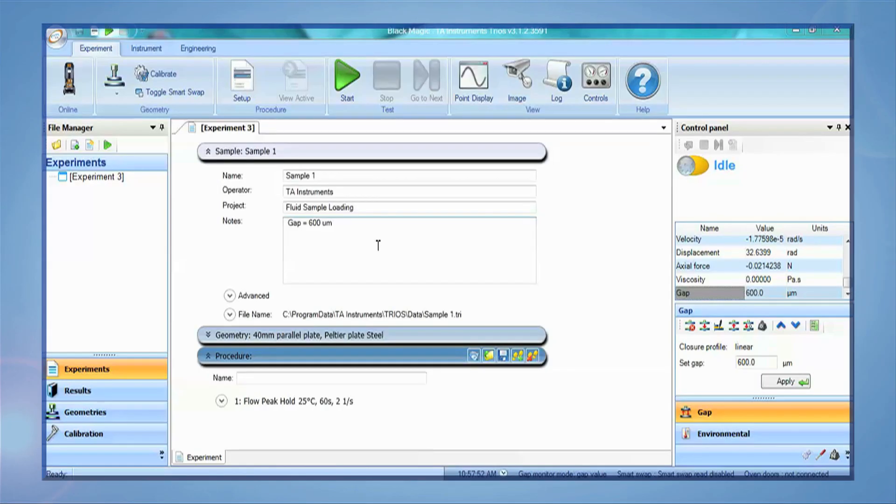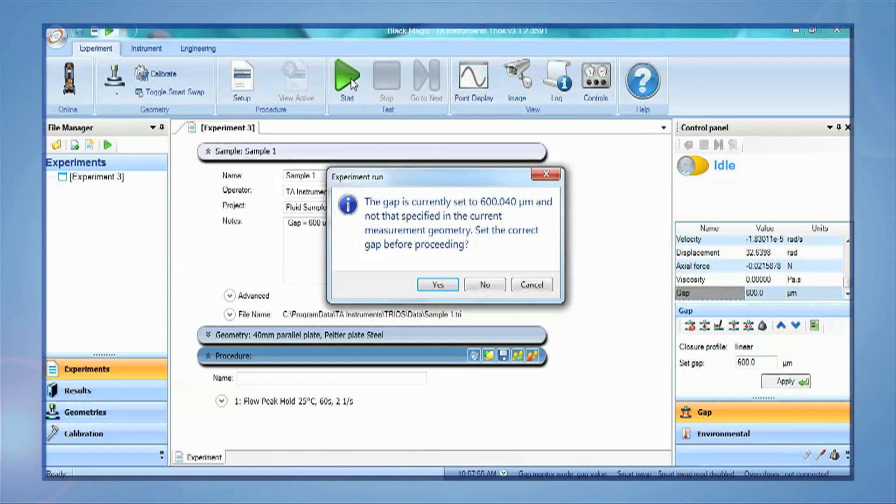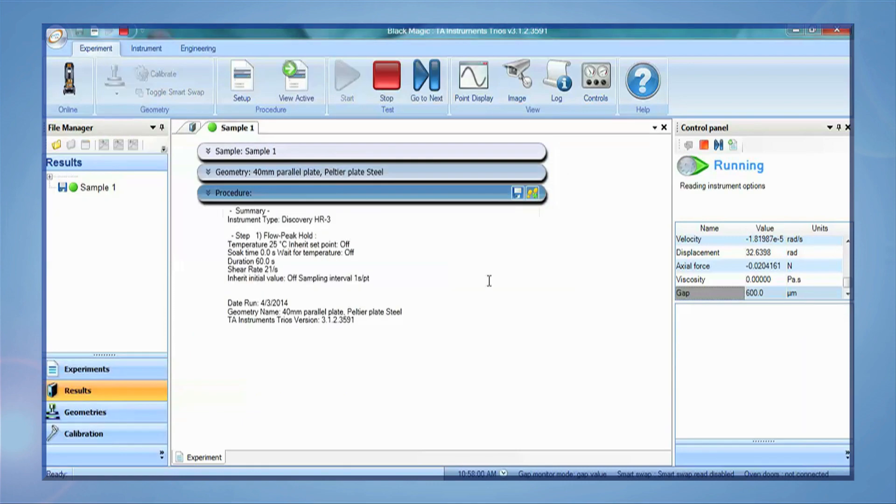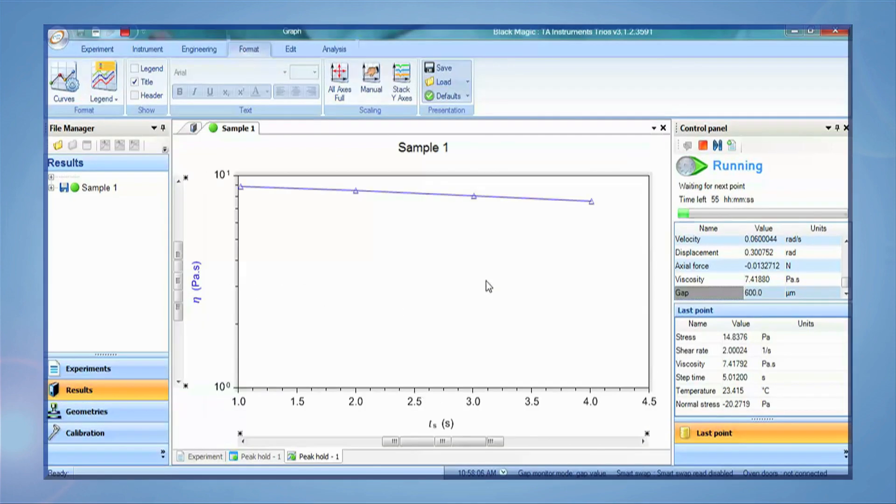The new gap will not match the operating gap value set in your geometry template. A prompt message will appear at the start of a test. By clicking no the new revised gap will be utilized therefore the equations will be correct.